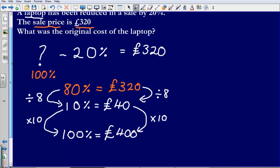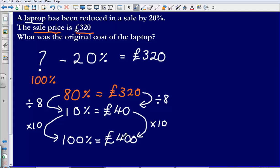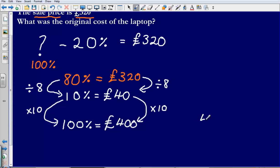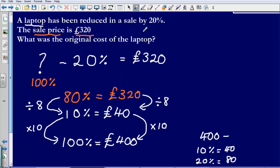Now, I can check my answer here. If I take 20% off of £400, let's see if that works. It should give me an answer of £320. So I've got £400. I want to take 20% of £400 off of it. So 10% is going to be £40. Then 20% would be £80. And so that means that £400 minus the 20% because it was reduced by 20%, £400 minus 80, that gives me an answer of £320. So my answer is correct. The original cost of the laptop was £400.